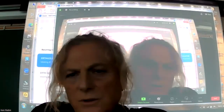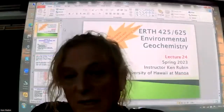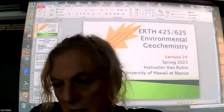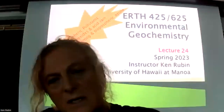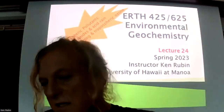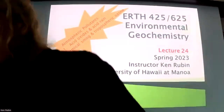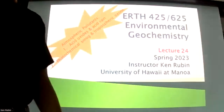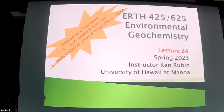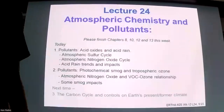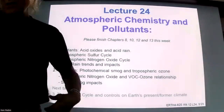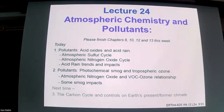Today we're going to cover two related topics, both in the atmosphere and both about pollution. One is the addition of acid oxides and the formation of acid rain. The other is photochemical smog and tropospheric ozone, which effectively come from the same sorts of processes — it's just a question of whether we have a drier or wetter atmosphere.